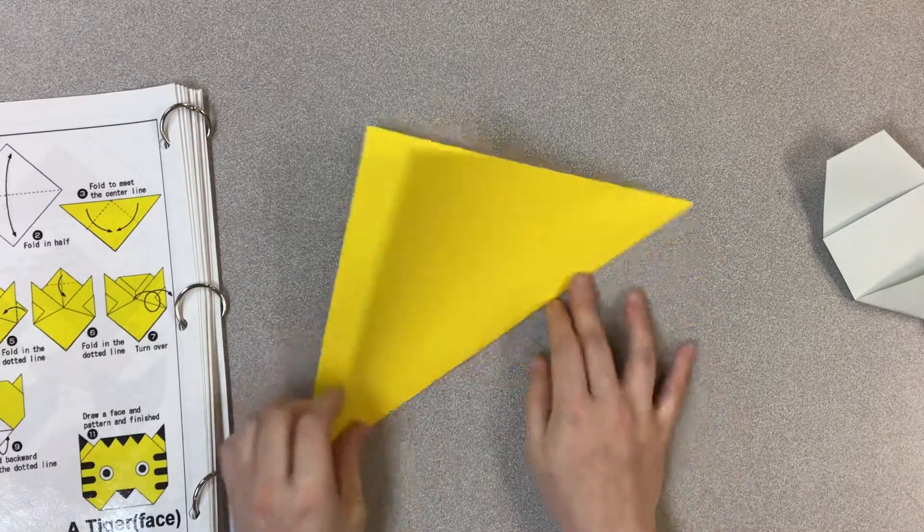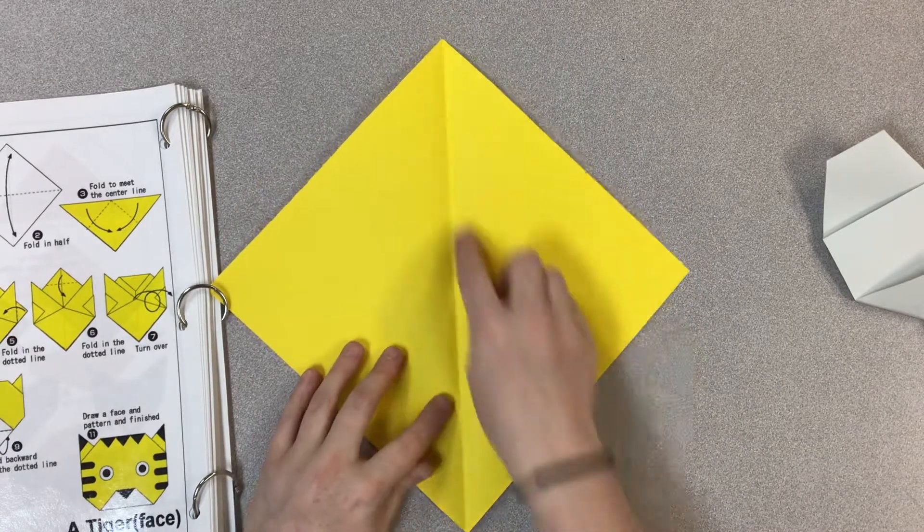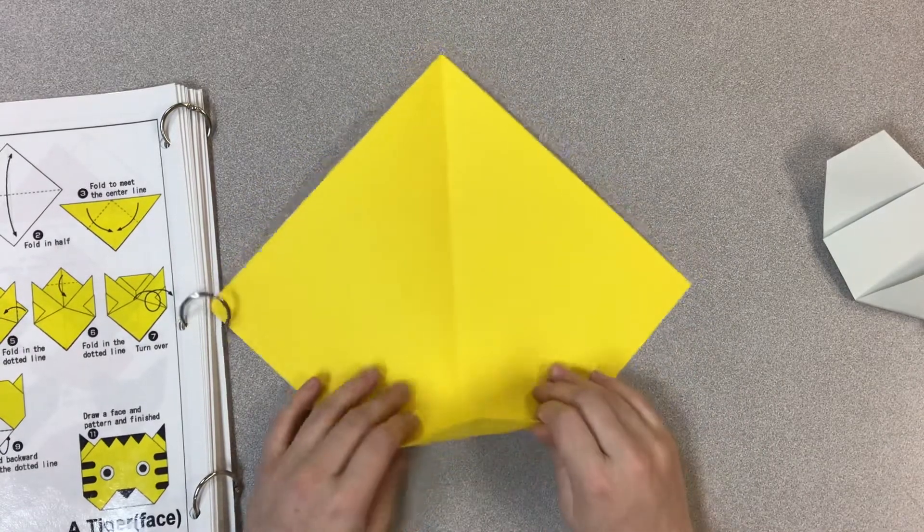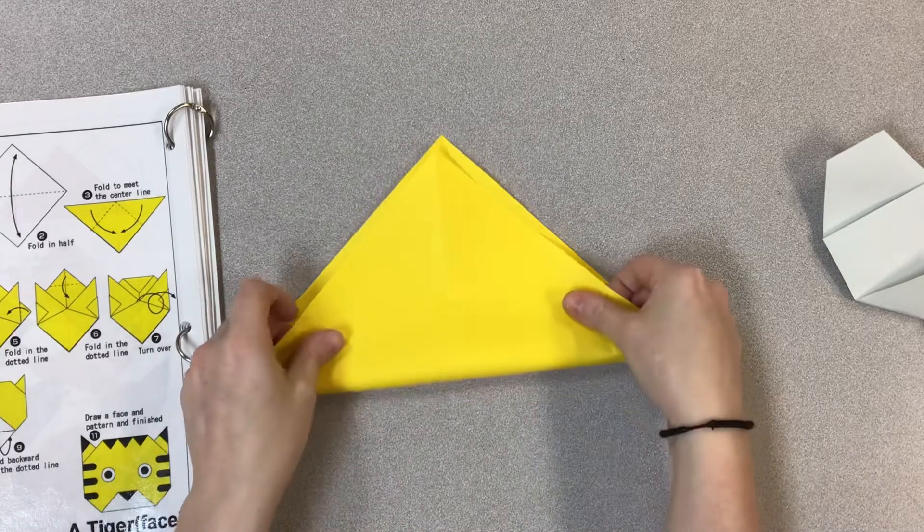And then I'm going to open it up and fold in half the other way. So I have my line down the middle now, and then I'm going to flip the paper upwards.